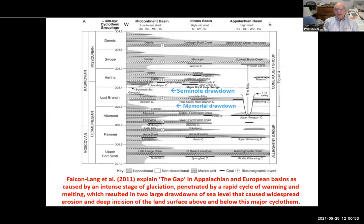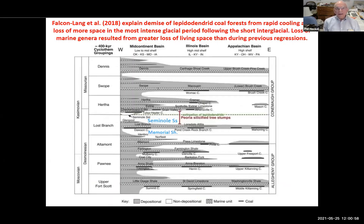Falcon-Lang et al. 2018 explained the demise of the Lepidodendron coal forests from rapid cooling. In other words, this was a rather abrupt warm period — the Lost Branch Formation — within an overall glacial period. He explained this from rapid cooling and loss of living space in the most intensive glacial period following the short interglacial. The loss of marine genera at the Seminole drawdown resulted from even greater loss of living space than during the previous regressions.